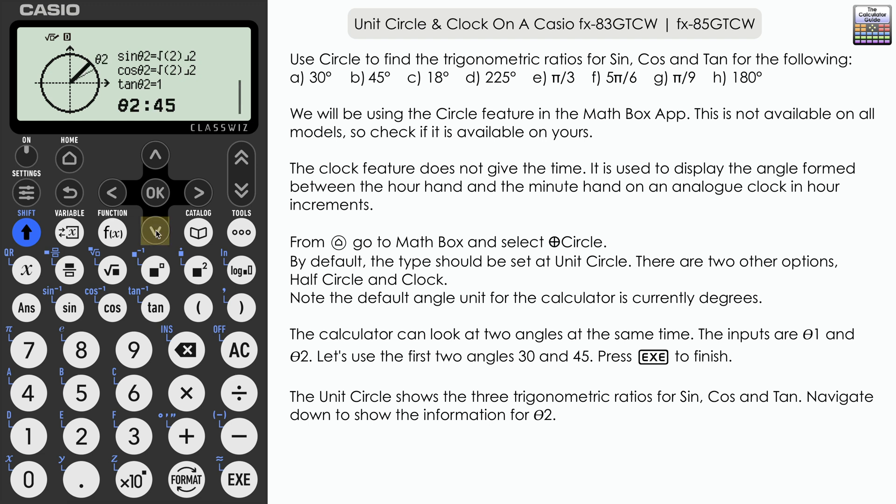If we navigate down we can see theta 2 which was 45. Both sine and cosine are given as root 2 over 2 and tan of 45 equals 1. We can do two angles at a time and see them displayed on a little diagram of the unit circle there.